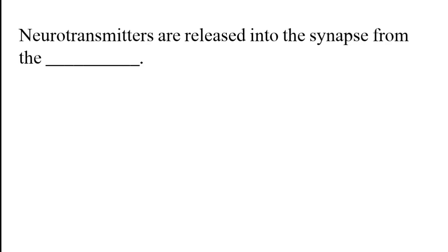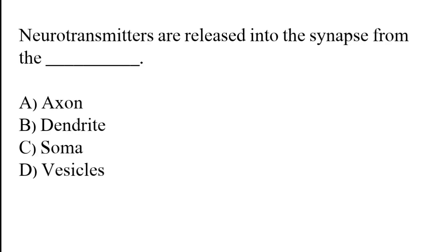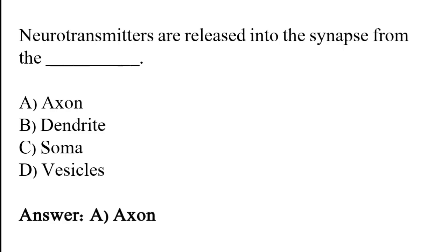Neurotransmitters are released into the synapse from which part? Options: Axon, dendrite, soma, vesicle. The correct answer is option A. Neurotransmitters are released into the synapse from the axon.